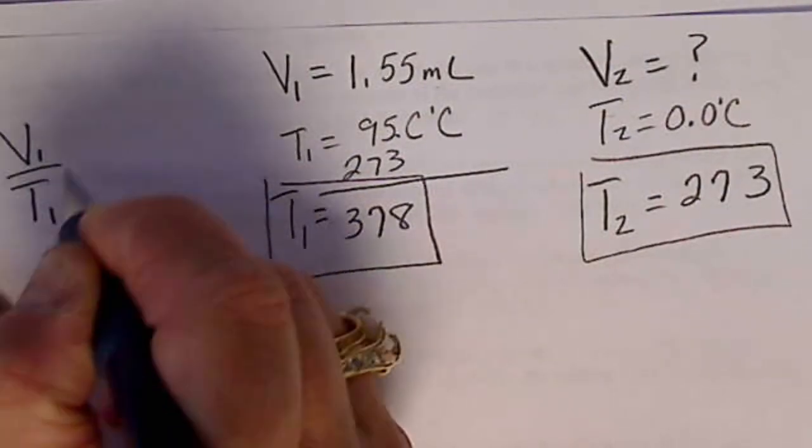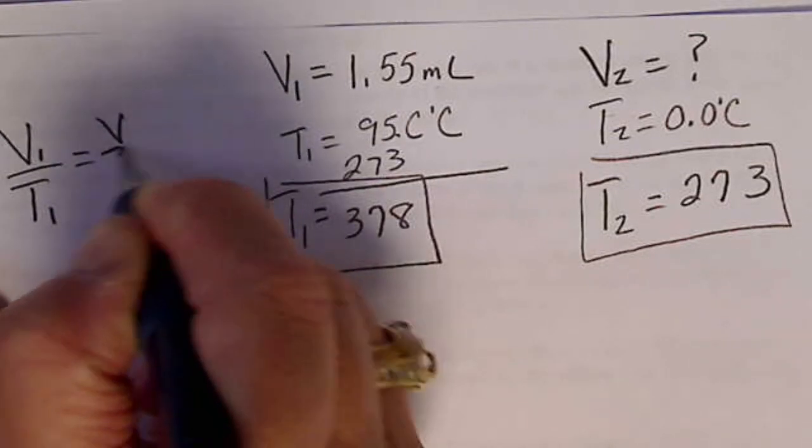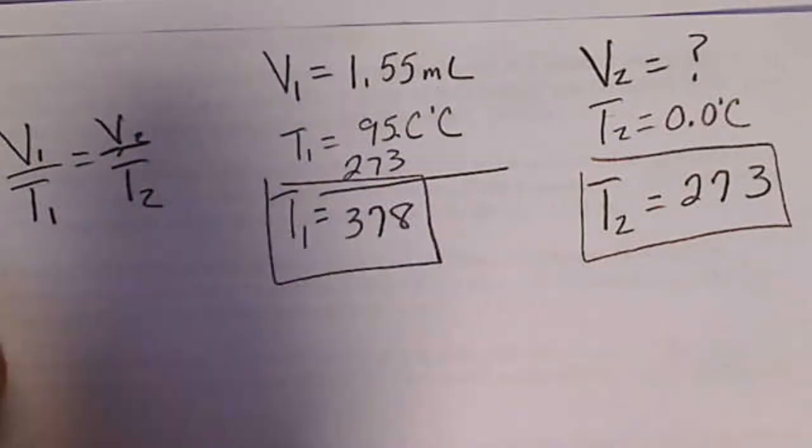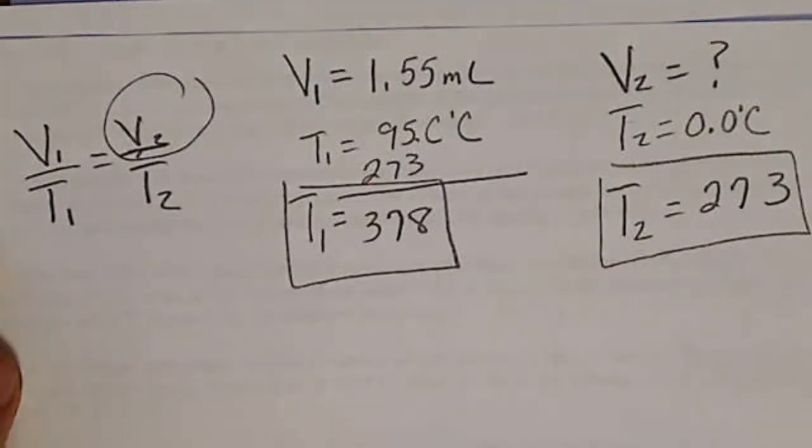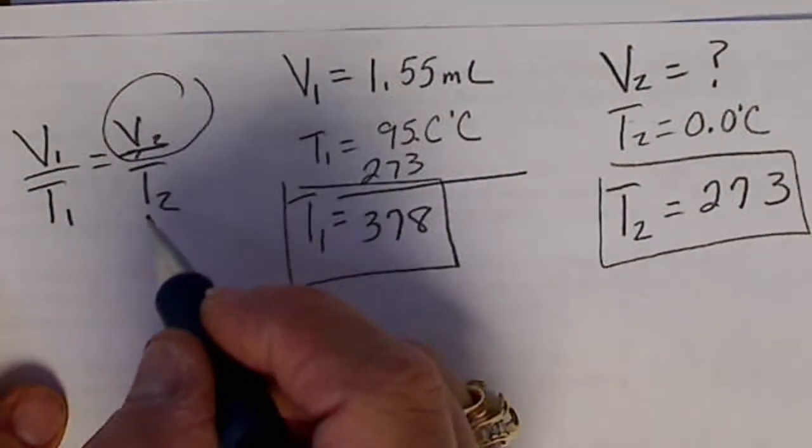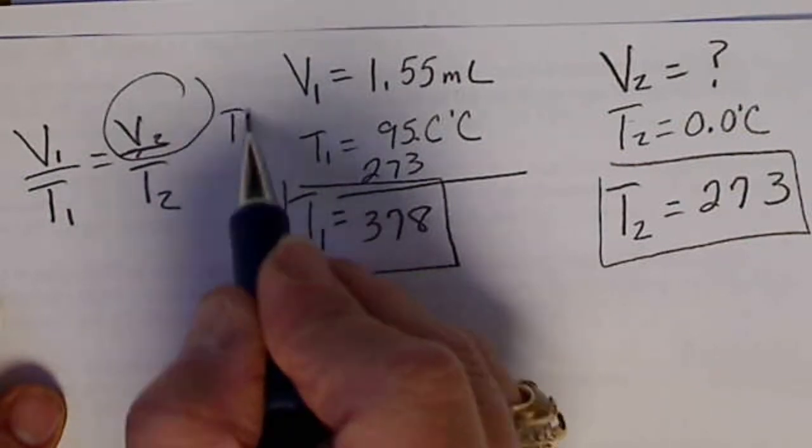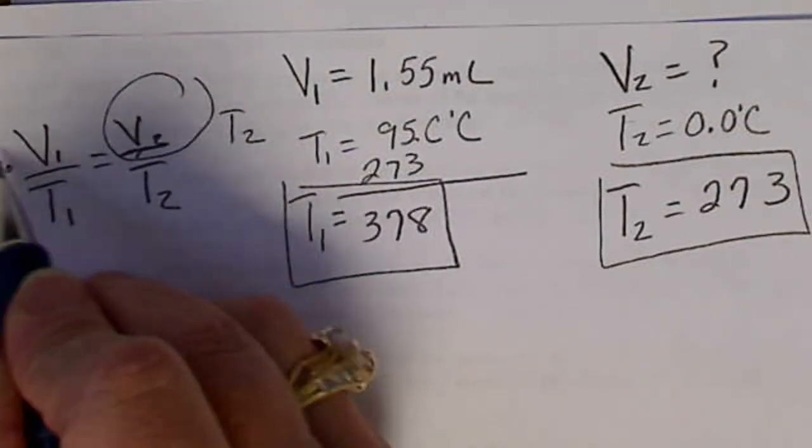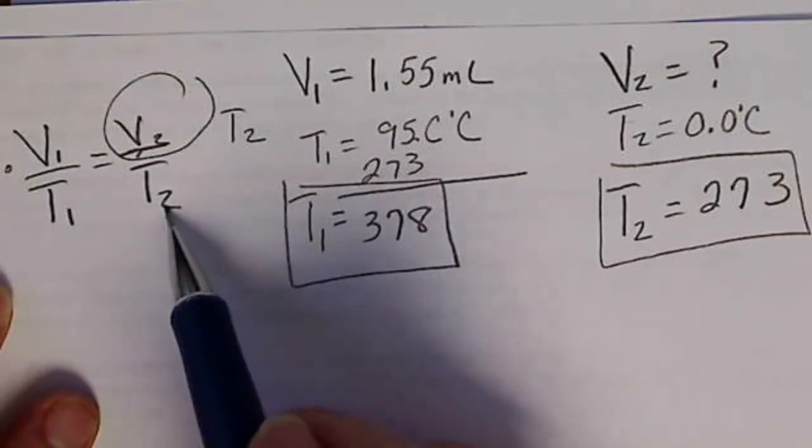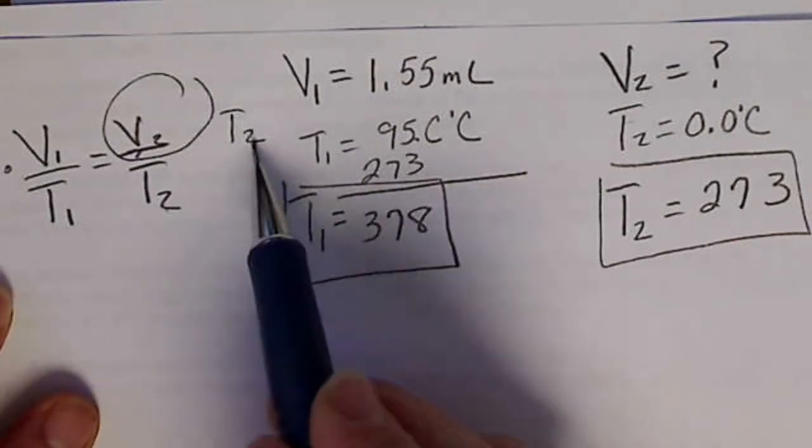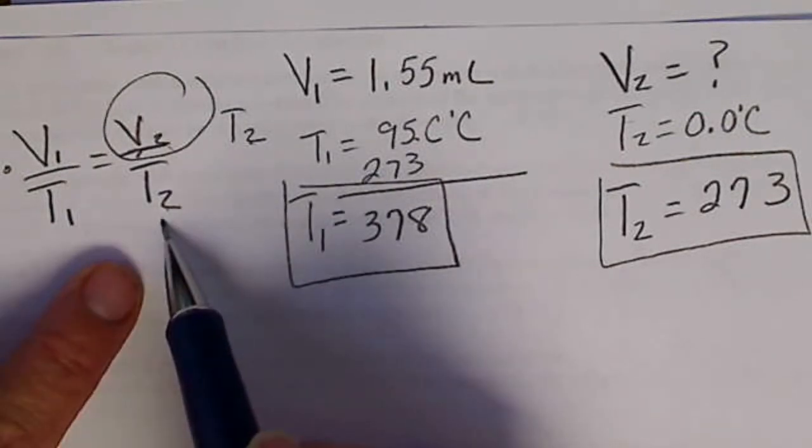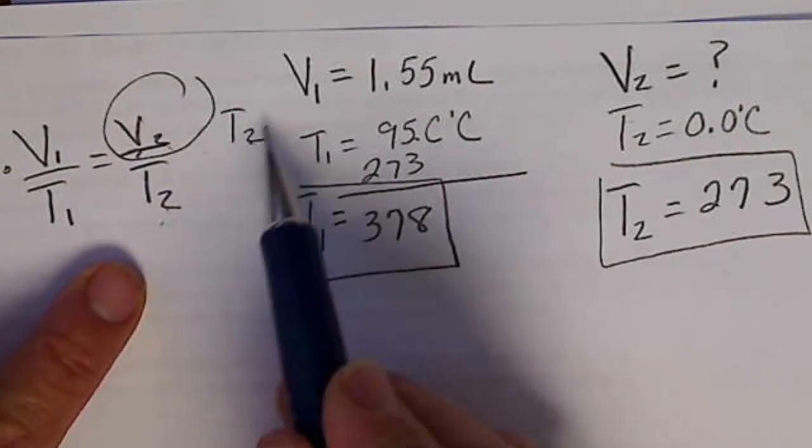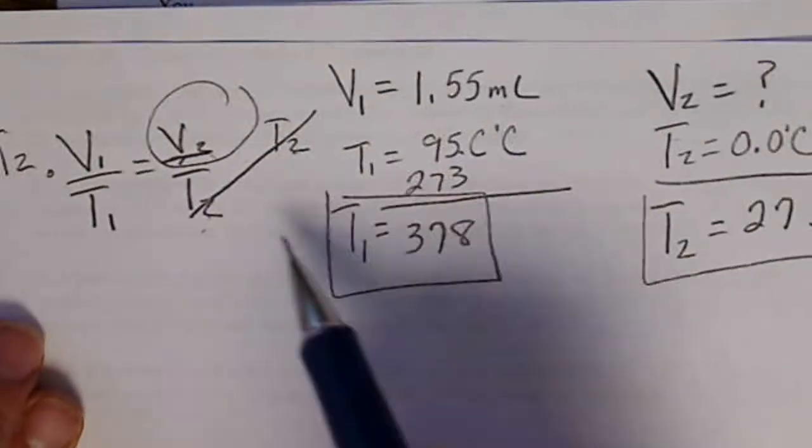So V1 divided by T1 equals V2 divided by T2. Since we're looking for this volume, then we can multiply both sides of the equation by T2, so the opposite of dividing by temperature is multiplying by temperature. So our unknown that we're looking for is being divided by T, so that's why we multiply both sides by T.